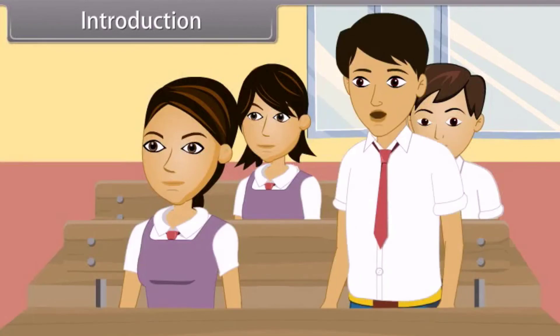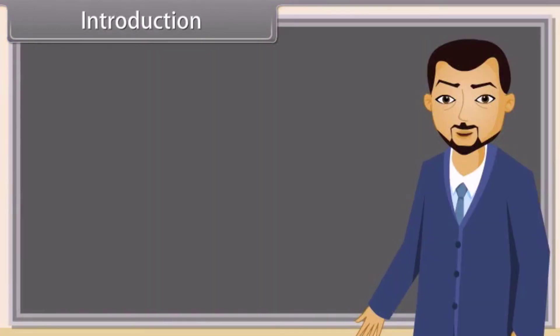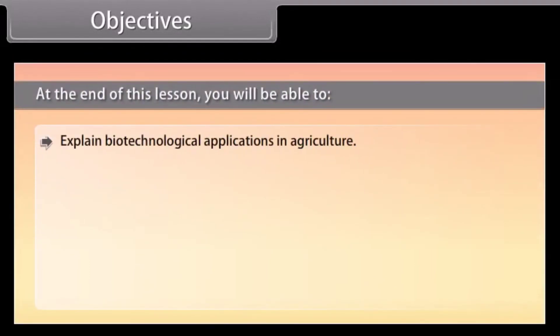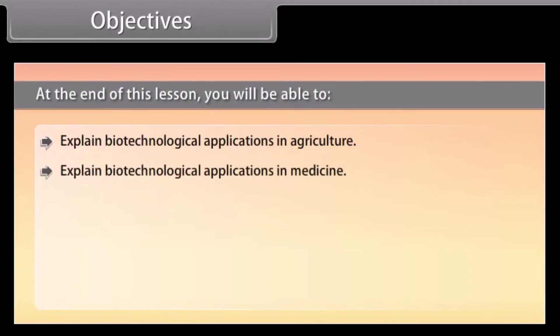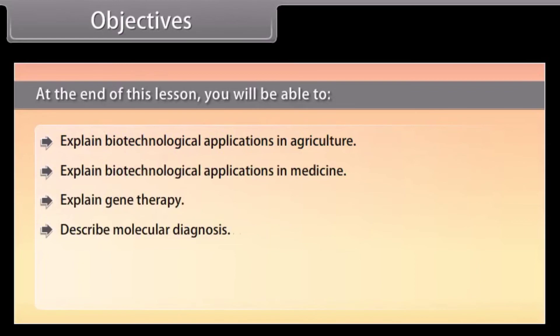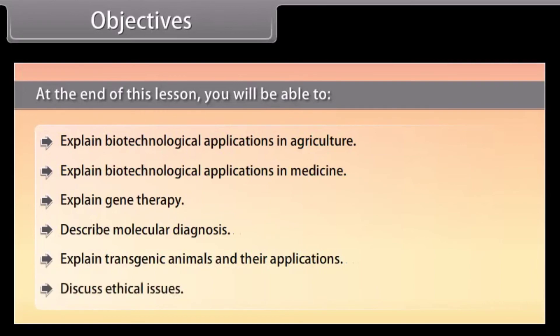Can anybody tell me what are the processes for which biotechnology is used? There are many processes for which biotechnology is used, such as gene transfer for identifying diseases, etc. Very good, Pratik. In this lesson, you will learn biotechnology and its applications. At the end of this lesson, you'll be able to explain biotechnological applications in agriculture and medicine, explain gene therapy, describe molecular diagnosis, explain transgenic animals and their applications, and discuss ethical issues.